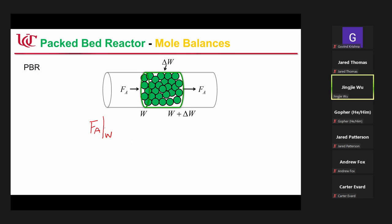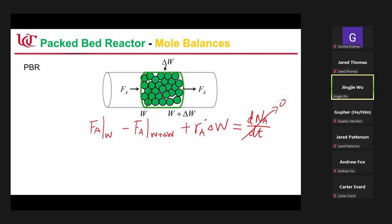For the PBR, we have FA with catalyst weight W. The outlet is at W plus delta W. The generation uses R'A — the reaction rate normalized to the weight of your catalyst. At steady state, dNA/dt equals zero.